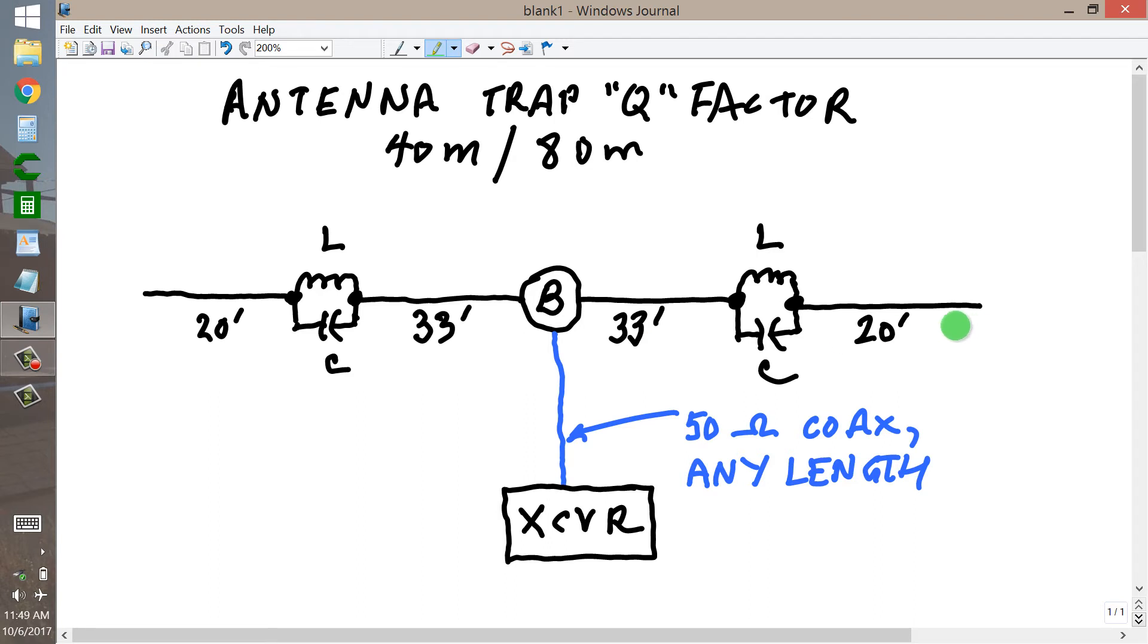Now these traps have a certain Q factor that generally depends on the total net reactance divided by the resistance. And the resistance is the key here, the lower the resistance of this trap, that is the less loss that it has, the higher the Q factor, the more selective it will be. And he wants this Q factor to be as high as possible.